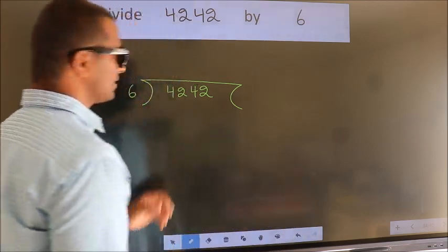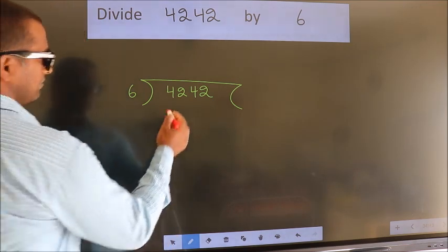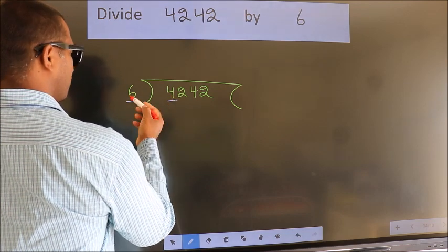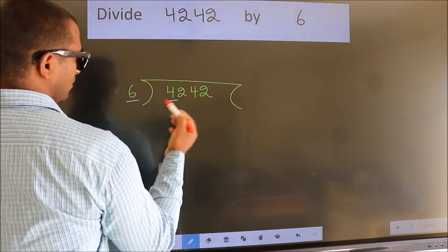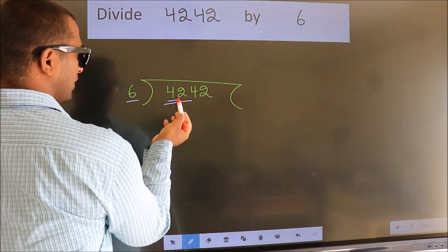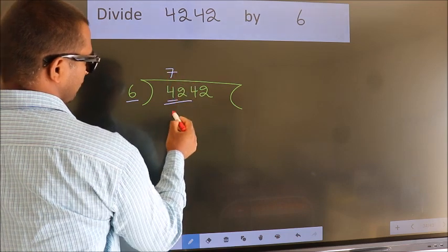This is your step 1. Next, here we have 4, here 6. 4 smaller than 6. So we should take two numbers, 42. When do we get 42? In 6 table, 6 times 7 is 42.